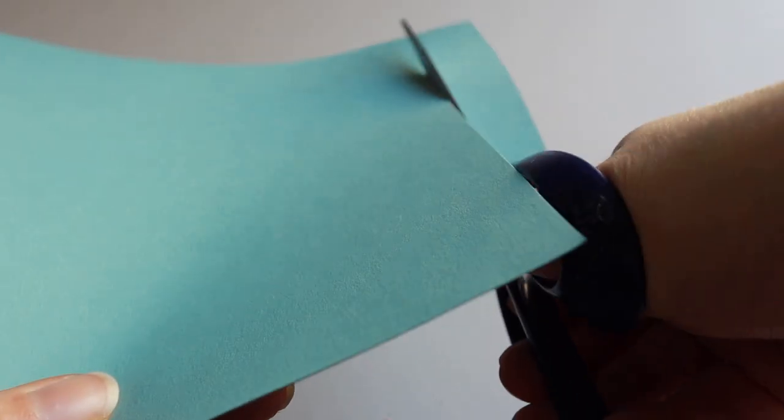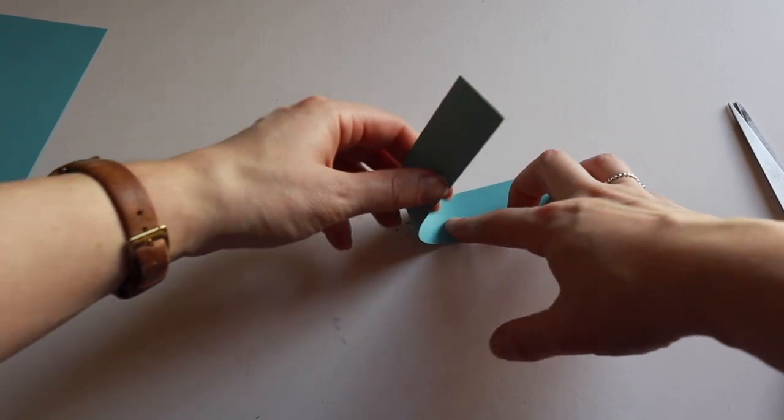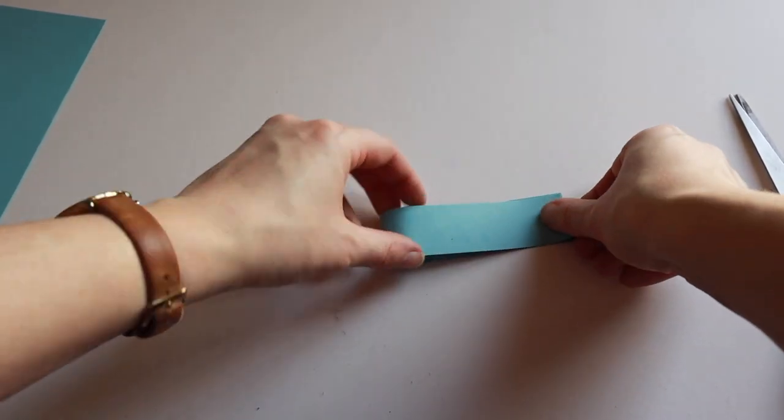Now we are going to make some arms. Start by cutting a strip of card from the short edge of a piece of A4. Fold the strip in half, then cut.